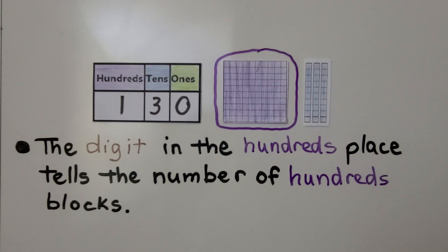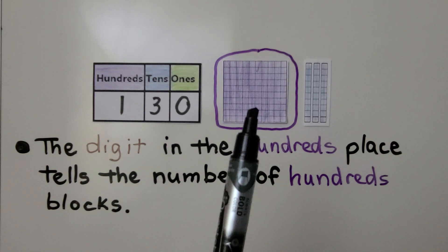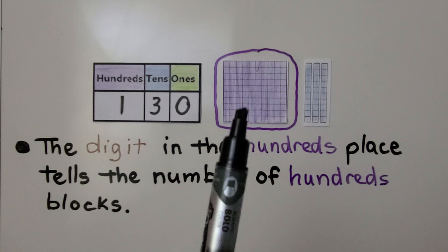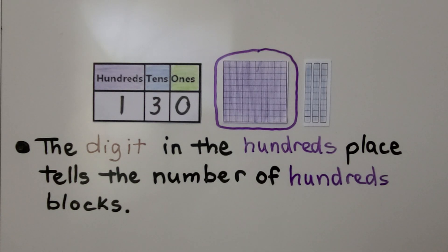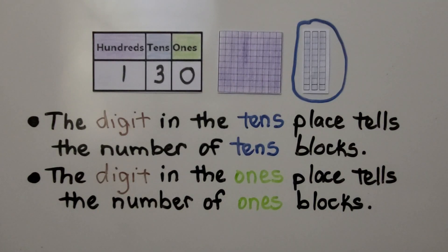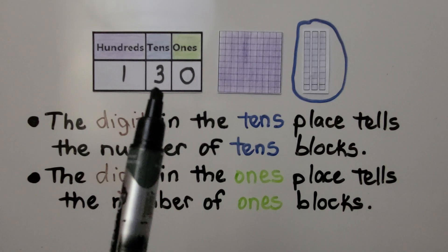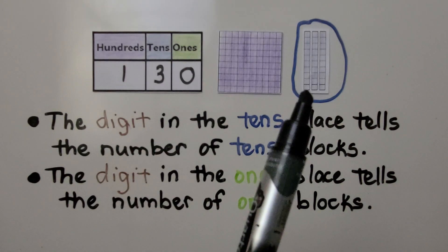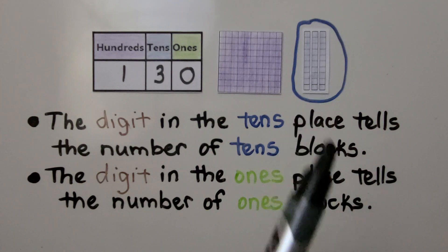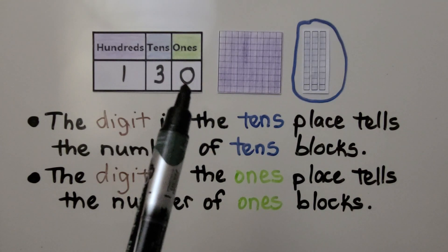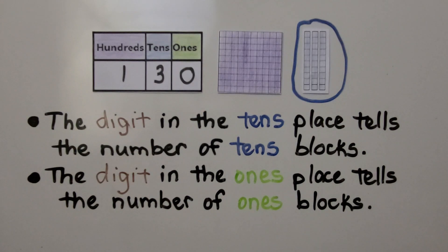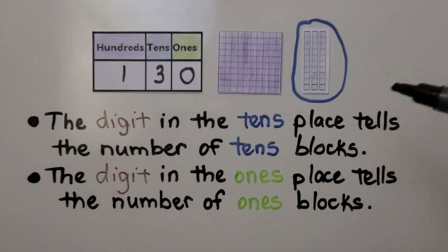The digit in the hundreds place tells the number of hundreds blocks. We have a one in the hundreds place, so we have one hundred block. The digit in the tens place tells the number of tens blocks. We have a three in the tens place, so we have three longs of ten. The digit in the ones place is zero, which tells the number of ones blocks — we have zero ones blocks.